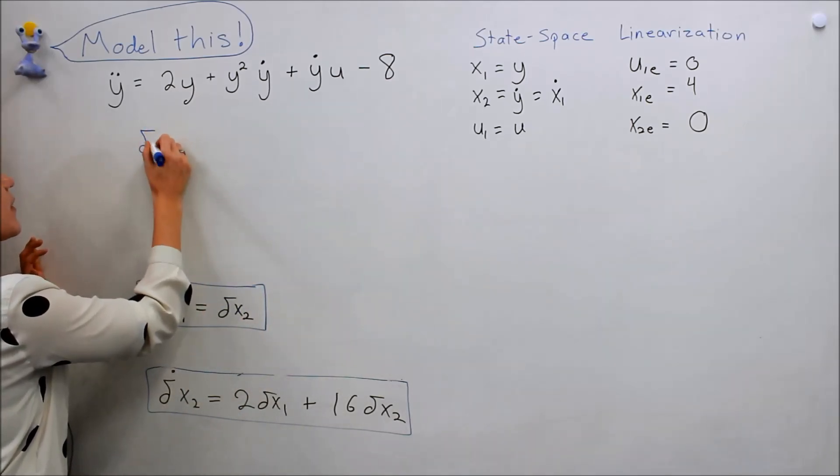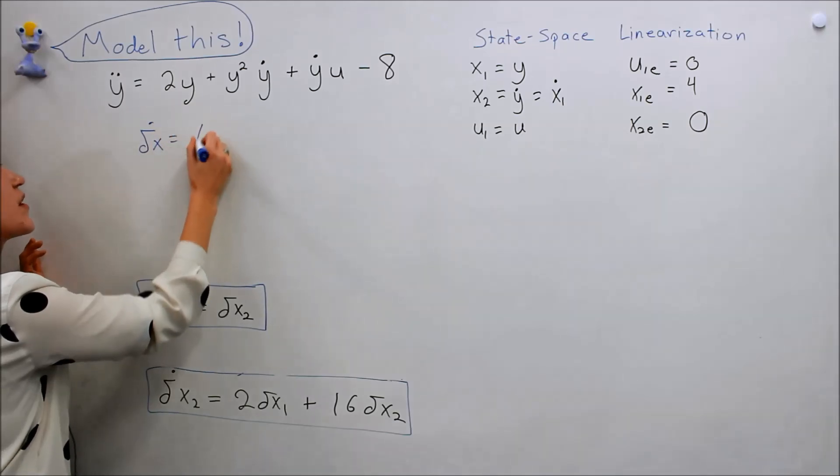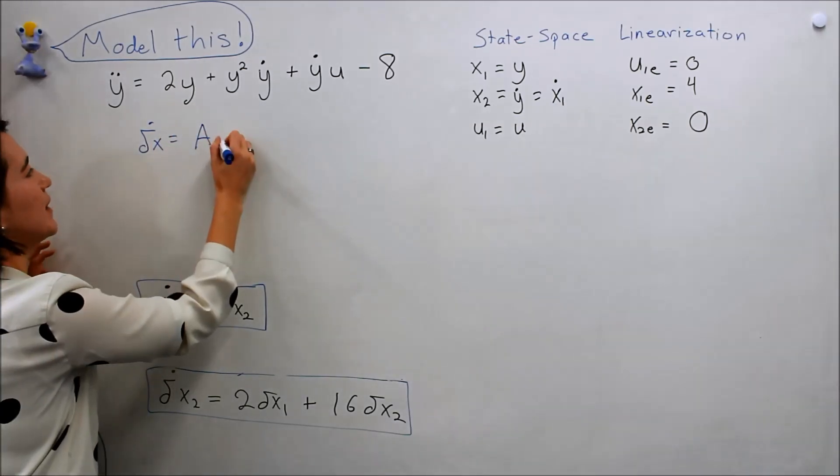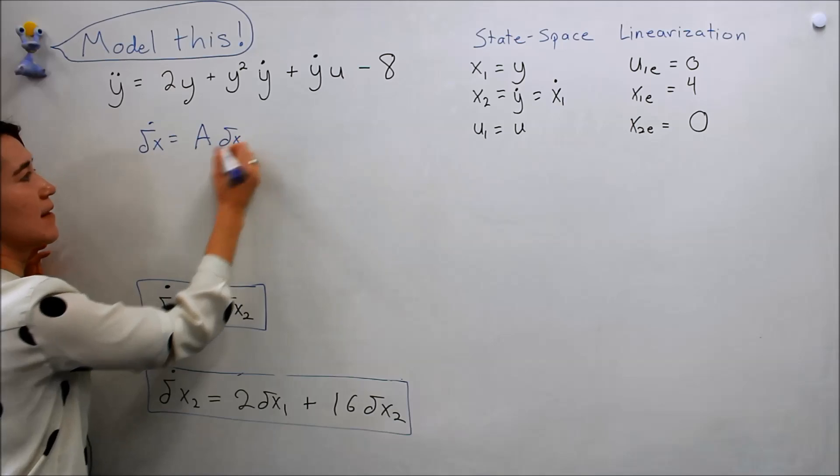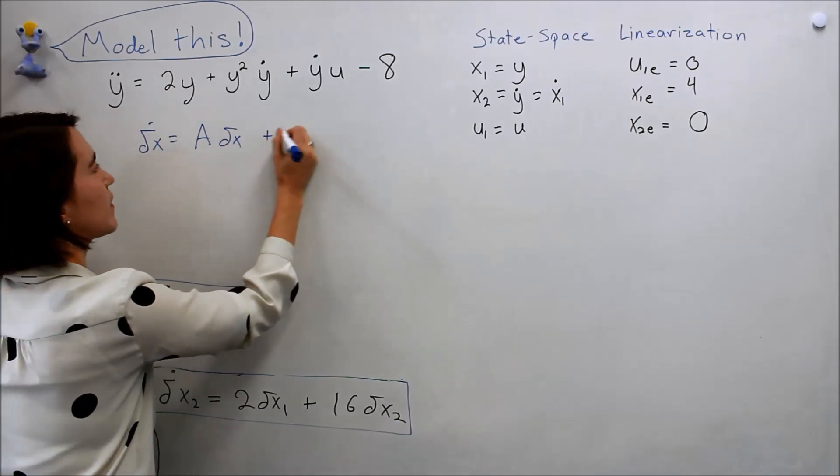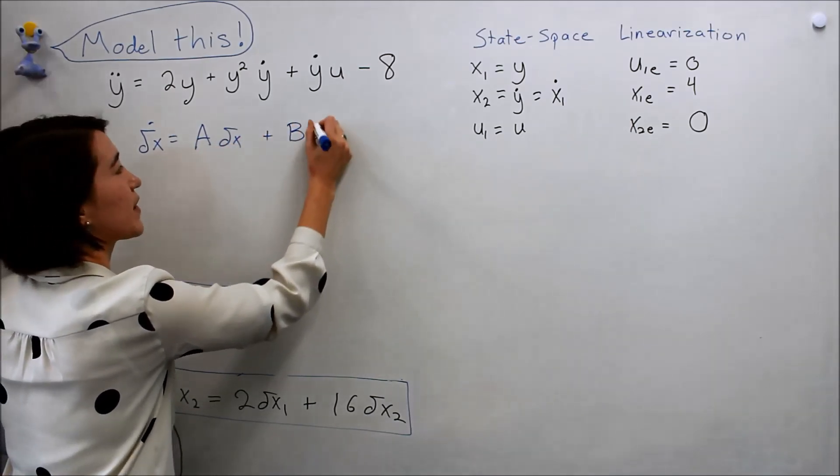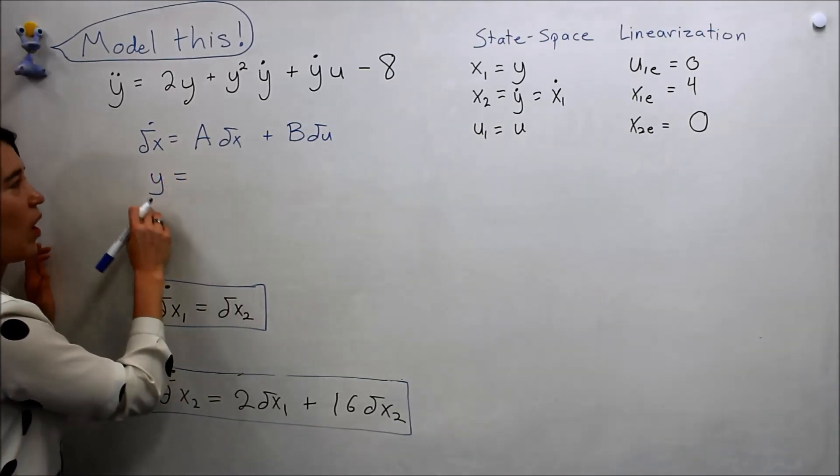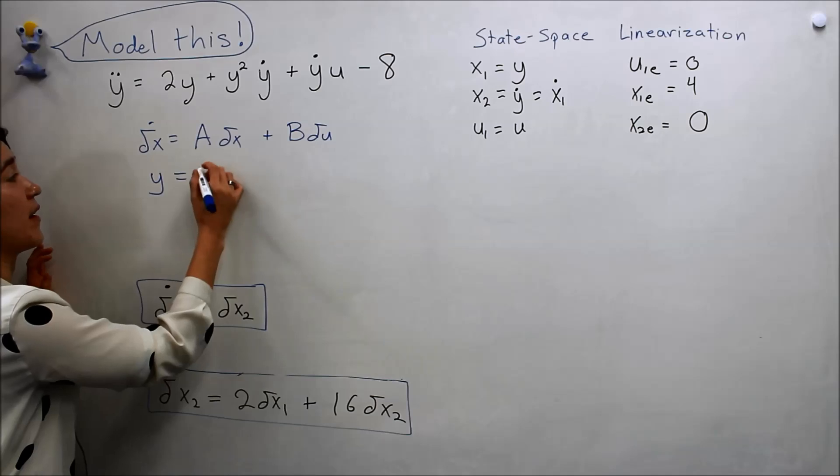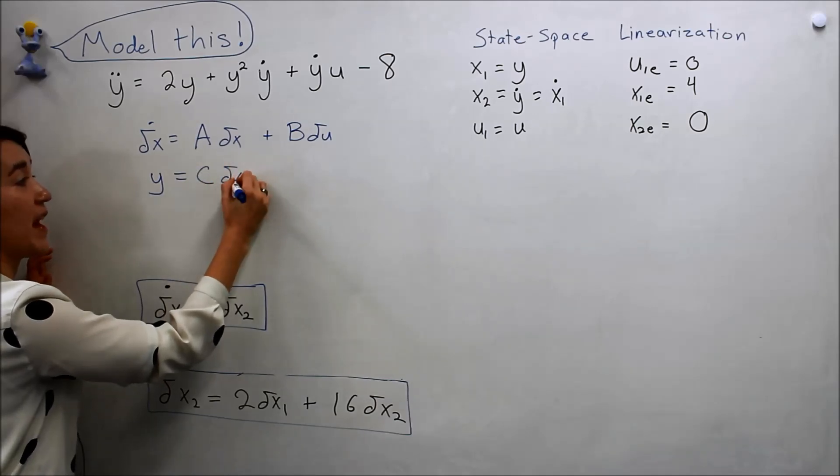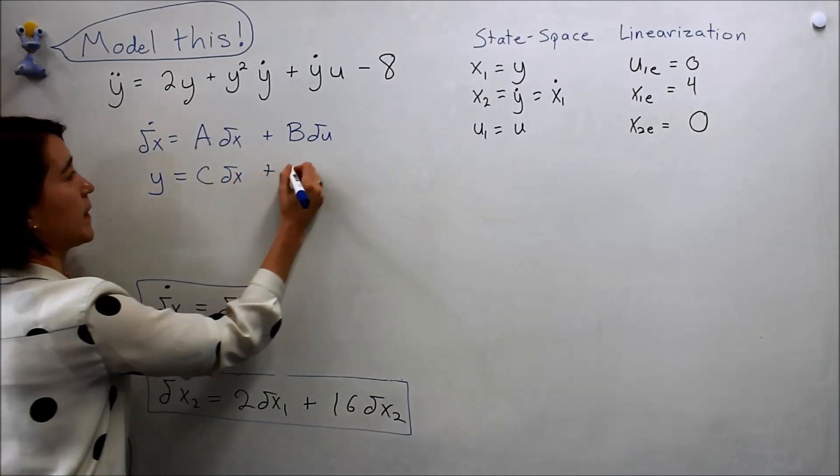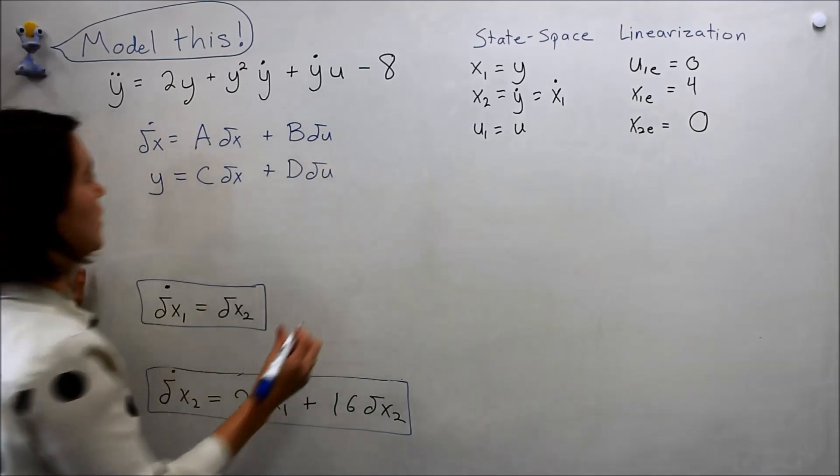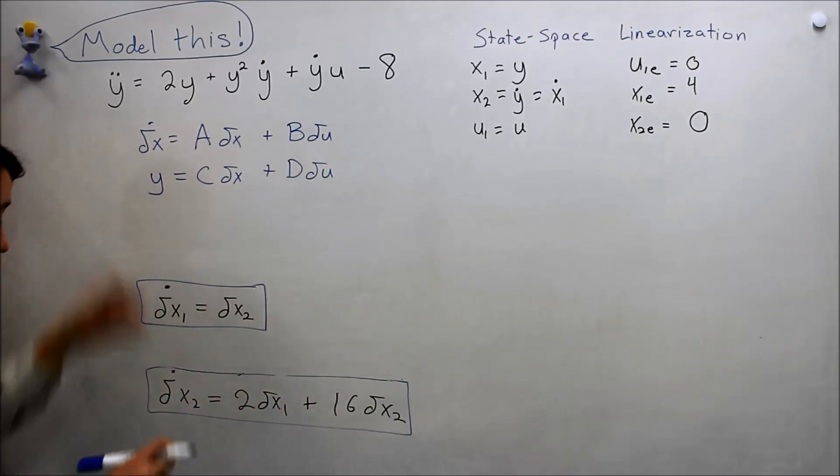We can think of it now as delta x dot, but we still use matrix A times delta x, and these are vectors, plus B times delta u. And we can call it still y, but we'll choose y based on delta x now: C times delta x plus D times delta u. So now we just need to put it into this form.